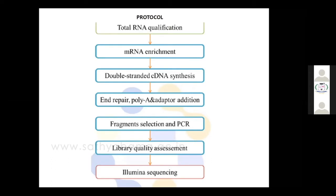After mRNA enrichment, we go for double-stranded cDNA synthesis — complementary DNA synthesis. After that, all the cDNA synthesis will not have a proper sequence at the end, so some mechanisms have to be done — like adding an adapter, adding a poly-A tail at the three prime end, and end repair. It's like primer walking — continuously the sequences at the end have to be good. From that end, we can sequence the second strand. Many primers are also involved in this process.